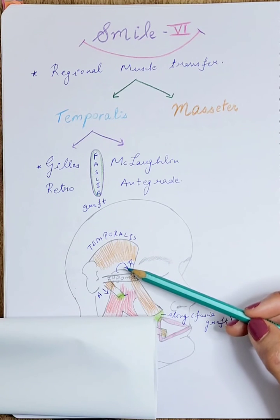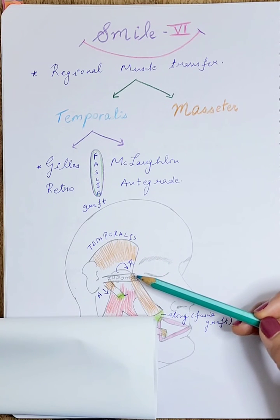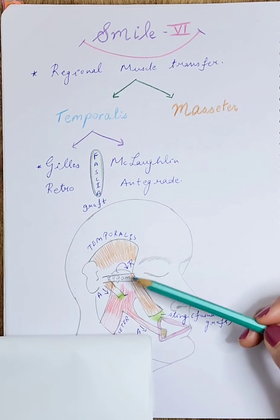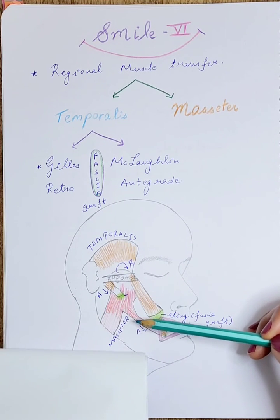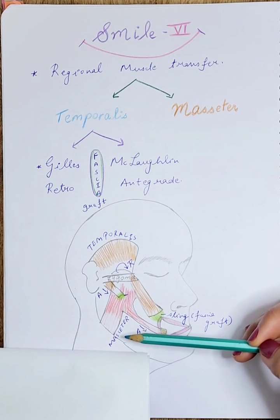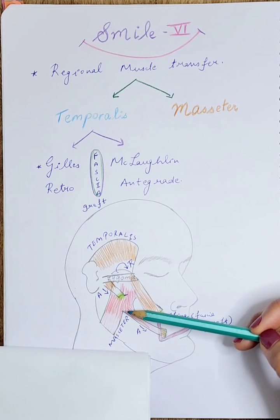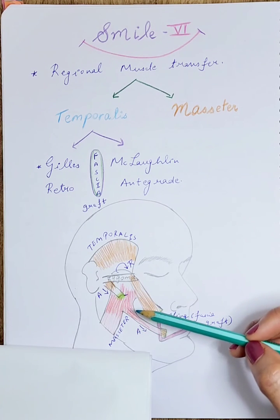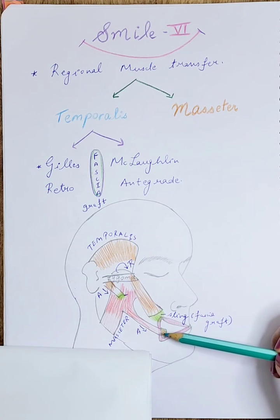The masseter muscle itself is supplied by the trigeminal nerve. The masseter muscle can be taken by splitting it from its insertion and transferred usually directly without the help of another graft. This also creates a pull in the line of the masseter and can help restore the oral commissure.